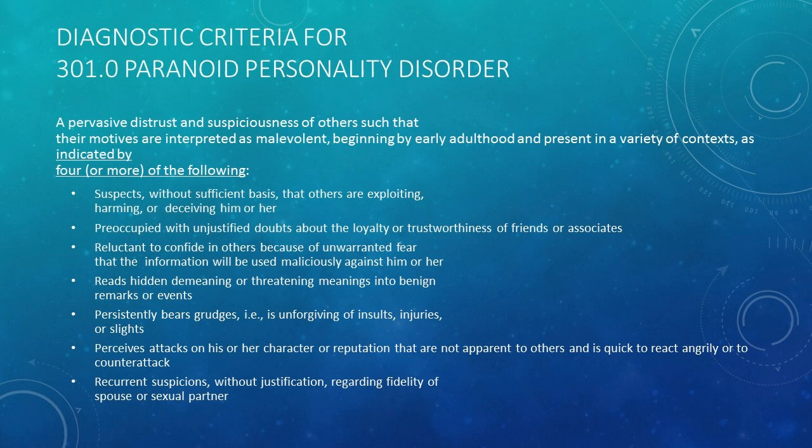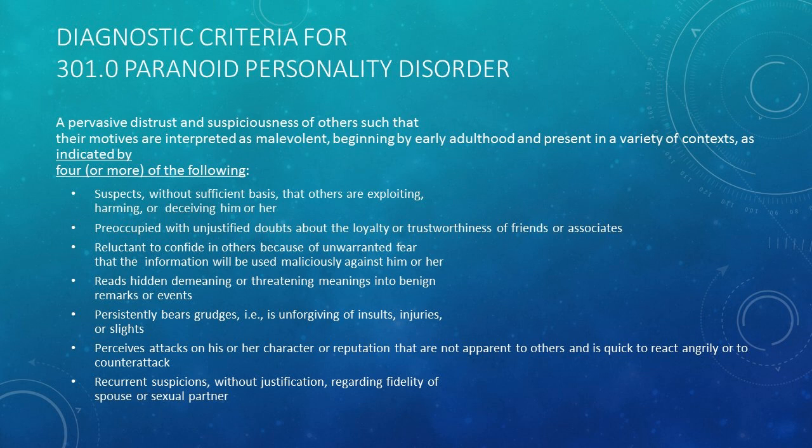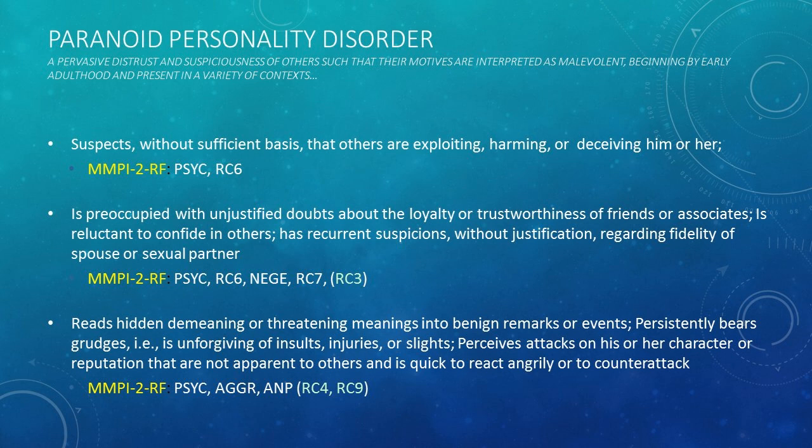The PowerPoint slides for each of the 10 PDs show a paraphrased set of criteria for each personality disorder, starting with paranoid, followed by a direct mapping of RF scales onto those criteria. I'm not going to go over in detail what the criteria for these personality disorders are — I assume those of you listening have some familiarity with the core characteristics associated with PDs. I'm going to spend a bit more time on paranoid PD than the others, just so you get a sense of how I'm setting this up.